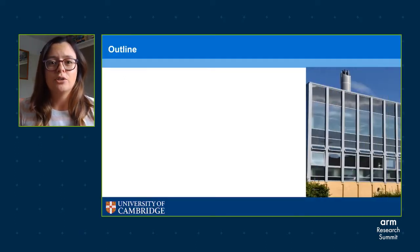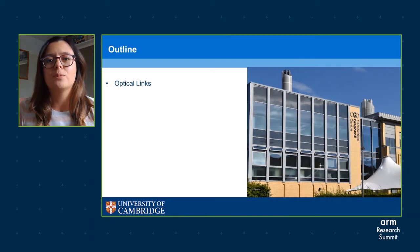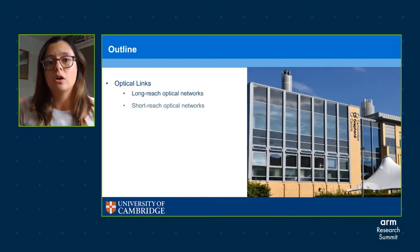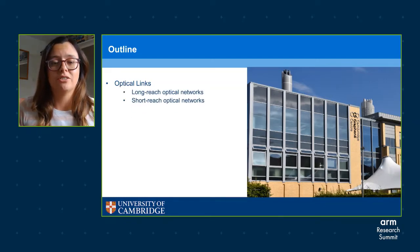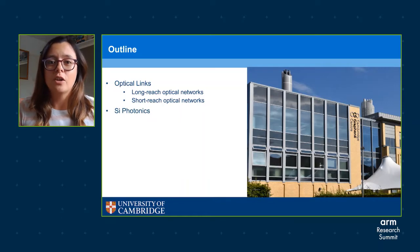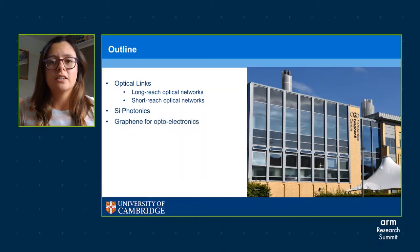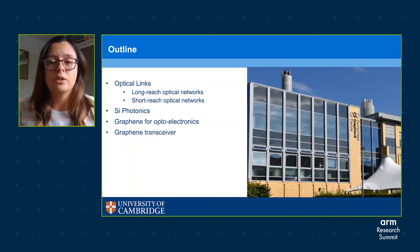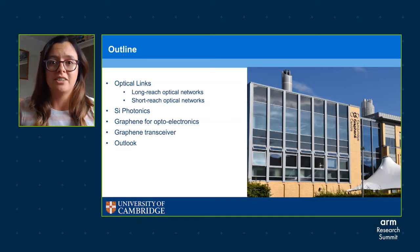Firstly I will describe a generic optical link and explain the different components, then give some examples of current implementations of optical interconnect for both long and short distance applications. Next I'll introduce silicon photonics technology and explain how we can make integrated photonic circuits. I'll then describe some properties of graphene and why we are interested in using it for integrated photonics, with some examples of the research we've been doing, before finishing with an outlook and summary.